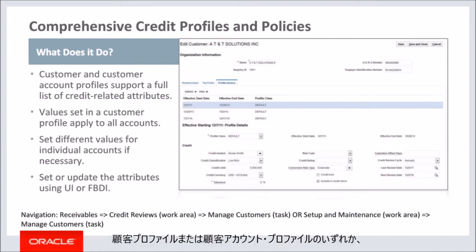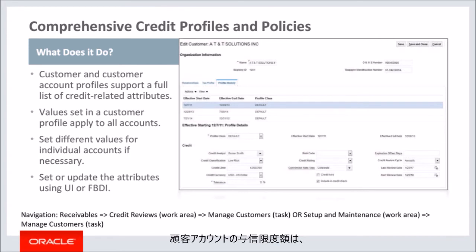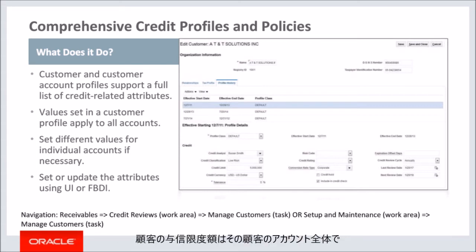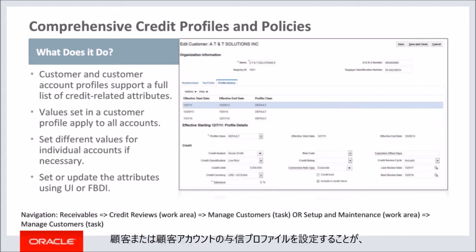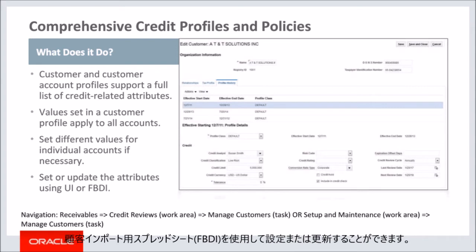You can choose to maintain these credit attributes in customer profiles or customer account profiles or both. The values set in a customer profile by default apply to all accounts of the customer. If necessary, you can set different values on individual customer account profiles. Most importantly, the credit limit of a customer account defines the total credit that one account can consume, while the credit limit of a customer defines the total credit limit that all of its accounts can consume. Setting the credit profiles is the prerequisite to most credit management functionality including credit checking, periodic credit review generation, and auto assignment of credit analysts. You can set or update these attributes using either the manage customers page or the customer import spreadsheet FBDI. Most of these attributes can also be defaulted based on the receivables customer profile classes.